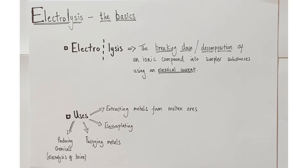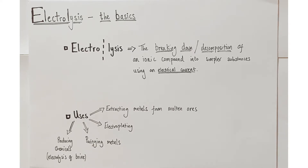The uses of electrolysis are myriad and very useful in our modern industrial lives. It can be used to extract metals from molten ores, usually those more reactive than carbon in the reactivity series. It can be used in electroplating, plating one metal onto the surface of another, to purify metals, and to produce many useful chemicals. A good example is the electrolysis of brine — salt water — which can produce hydrogen, chlorine, and sodium hydroxide.